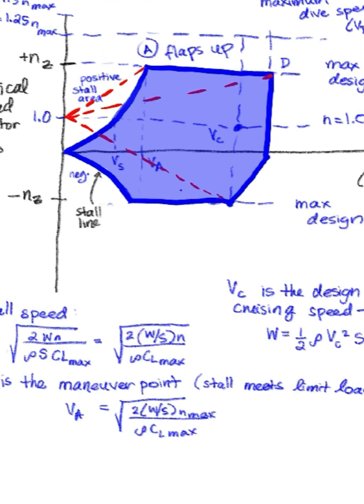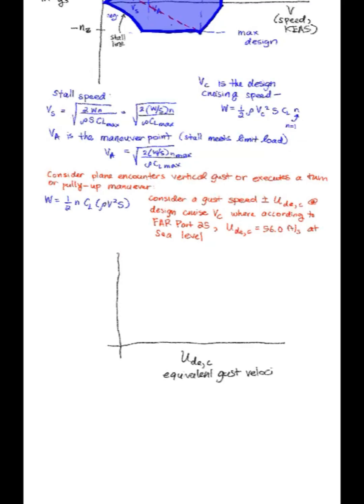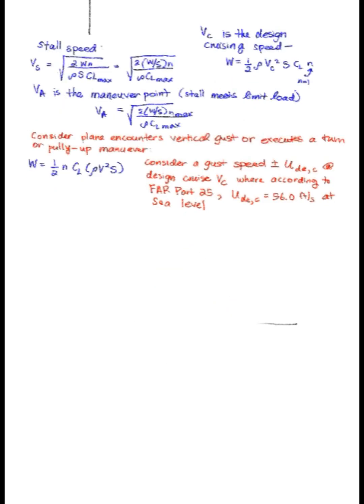And here, N equals 1. So that's the design cruising speed. We draw our lines and get our VN diagram. But wait, you didn't mention gust lines. Don't worry, I got you. So consider an aircraft that is encountering a vertical gust or executing like a turn or pull-up maneuver. Now consider the gust speed. That's UDE, which is defined by FAR Part 25. But as you can see, let me just draw you how the equivalent gust velocity changes in terms of altitude and also the speeds.